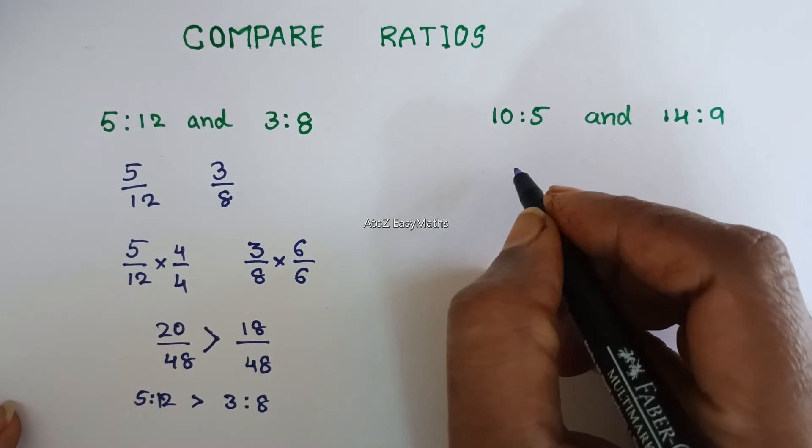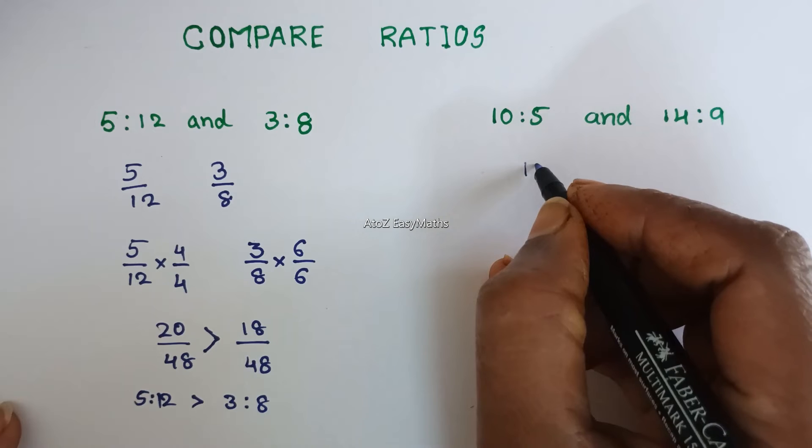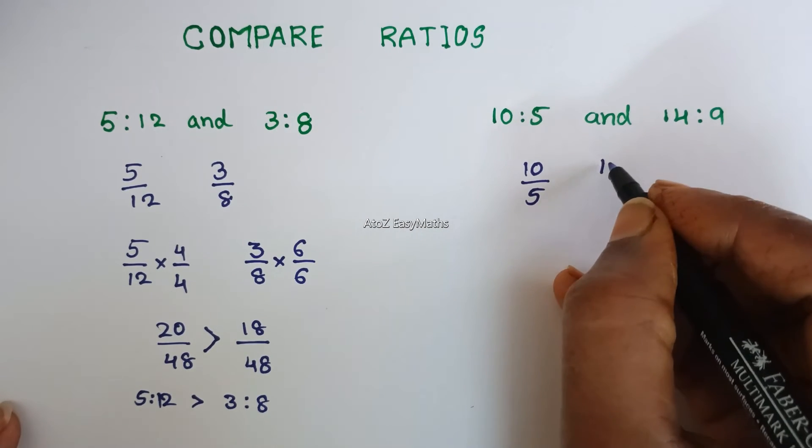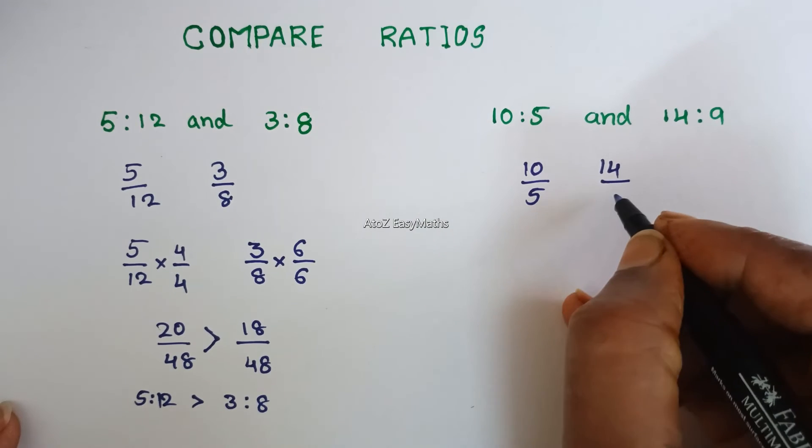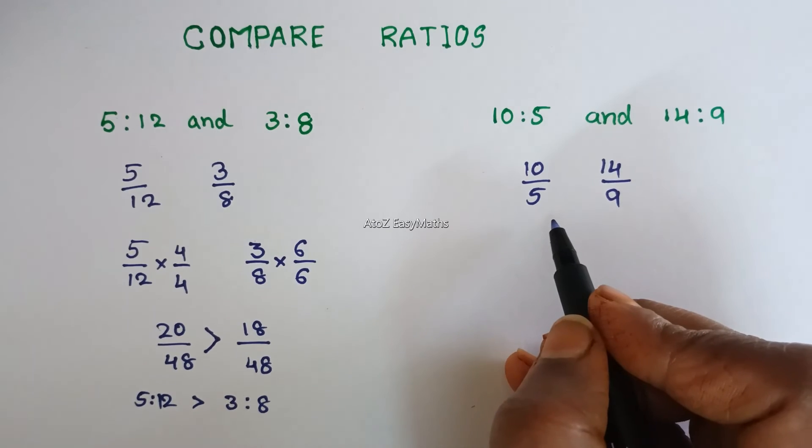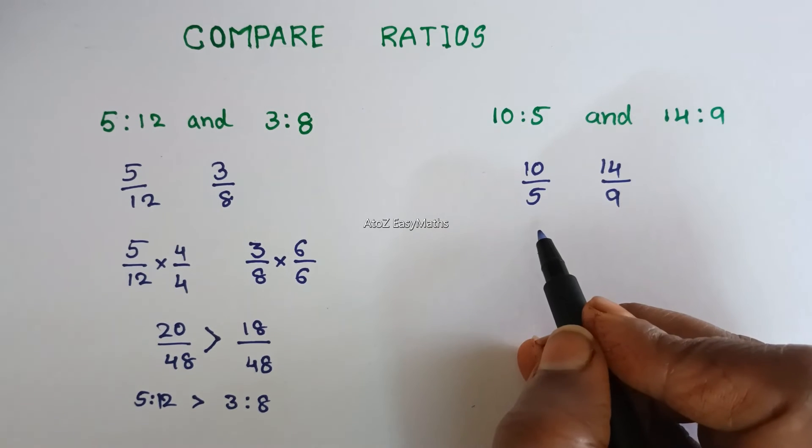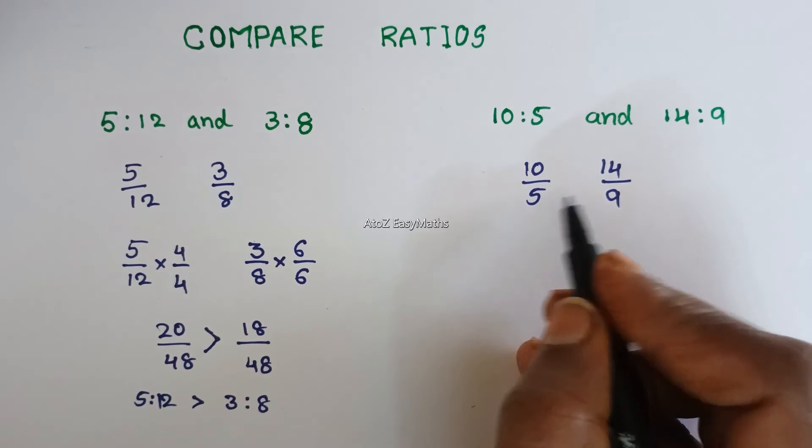Same like the previous problem, we can write it as 10 over 5 and 14 over 9. Now to make the denominators equal on both sides.